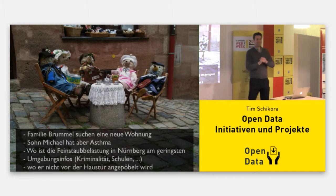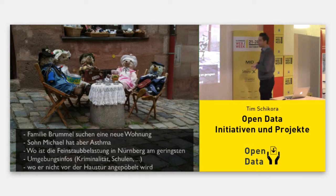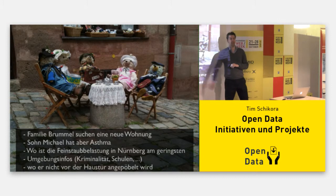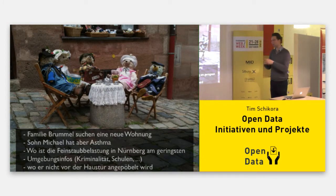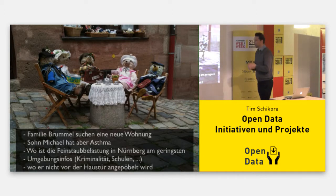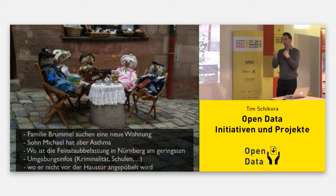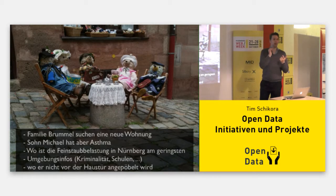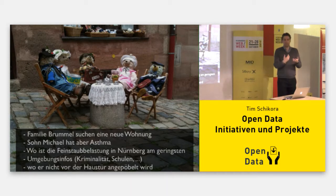Let's start with a little story. This is a small family and they are searching for a new apartment. Their son Michael has asthma. So they want to know what the particle pollution in Nuremberg is, which areas have the least particle pollution, how criminal rates are, how the schools in certain districts are, and so forth — they have a few needs to address to find out where they want to move.